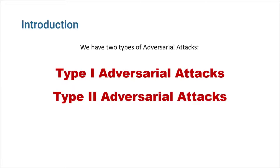The term type 1 adversarial attack refers to an approach targeted at making the model produce more false positives. The type 2 adversarial attack, on the other hand, concentrates on raising the false negatives.